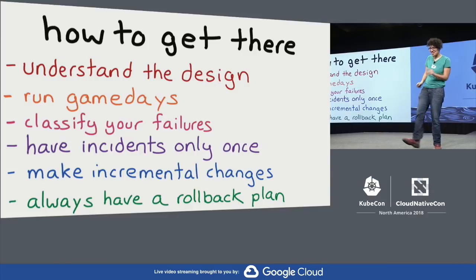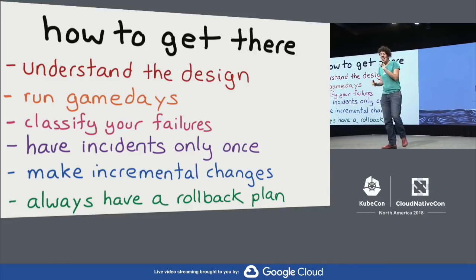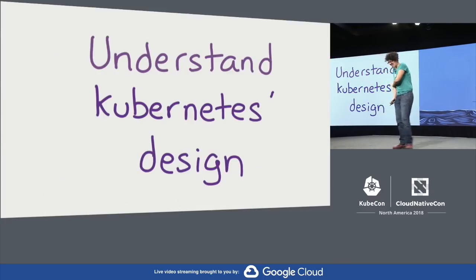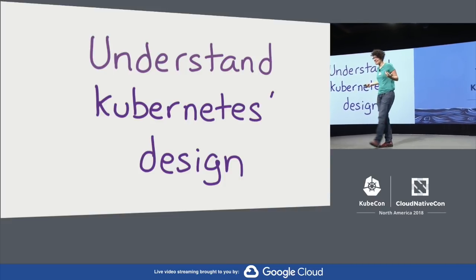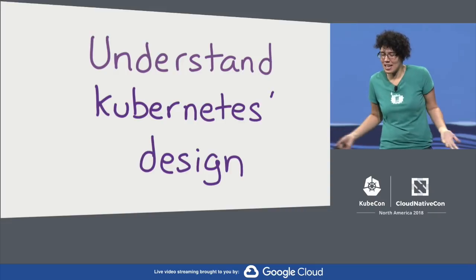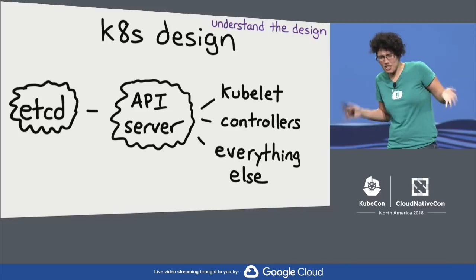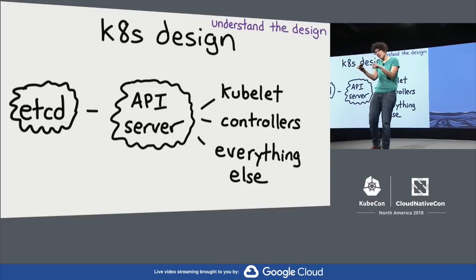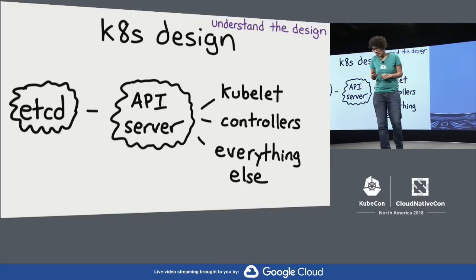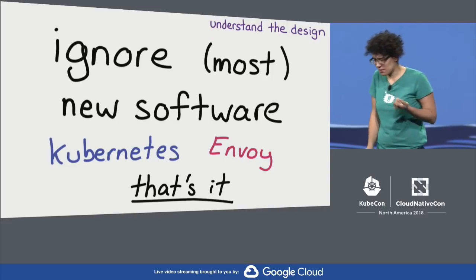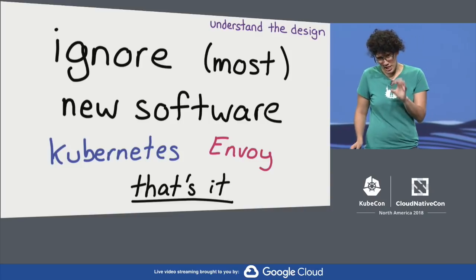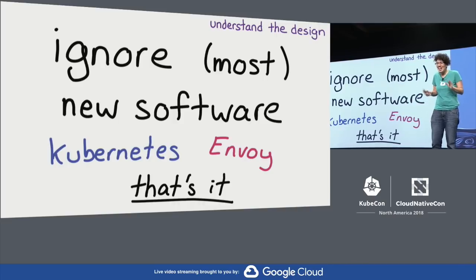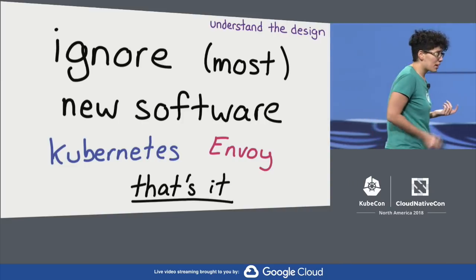Step one is understanding Kubernetes design. If you're going to run software in production, you need to know how it's designed and how it works. In Kubernetes' case, you have etcd where data is stored, you have the API server, and then all these stateless services. We operate Kubernetes ourselves, so it's really important to understand this. We also try to focus our efforts on a really small set of software — we use Kubernetes, we use Envoy, and we don't use a lot of other stuff. Focusing really helps us build much higher reliability systems.